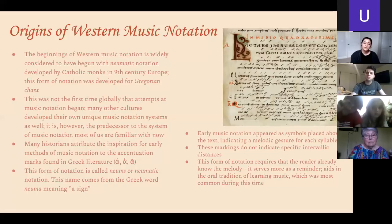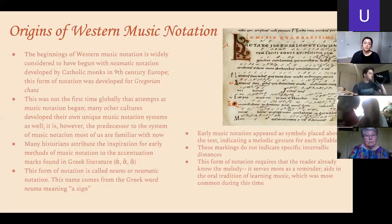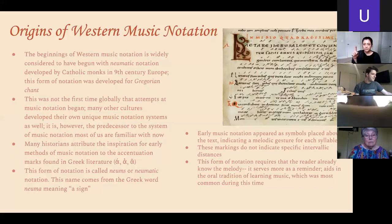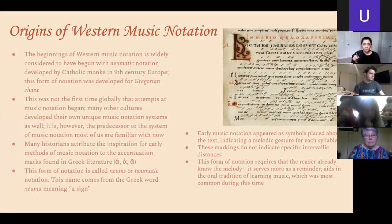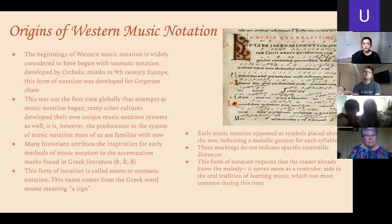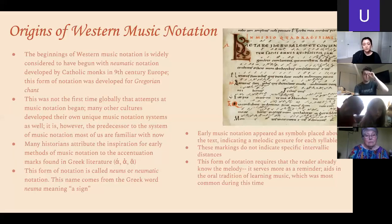Many historians attribute the inspiration for early methods of music notation in Europe to the accentuation marks in Greek literature — those little dashes and squiggly lines above letters. You can see in the picture that there are different kinds of dashes and squiggles that look very similar to Greek literature accent marks. This kind of notation is called neumes, or pneumatic notation, and it comes from the Greek word pneuma, which means a sign or symbol.